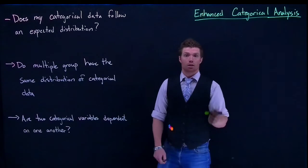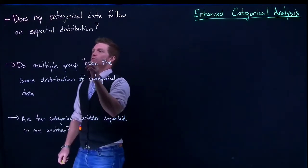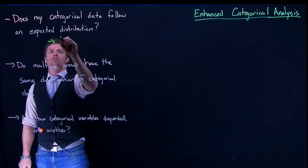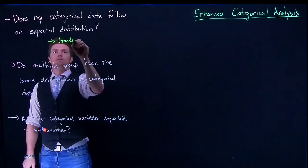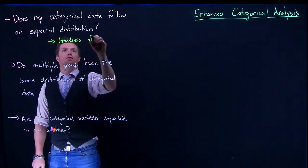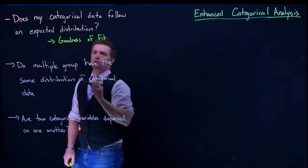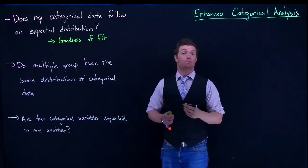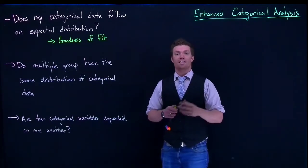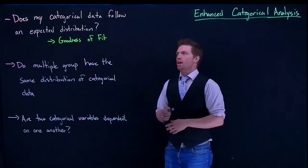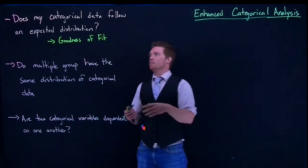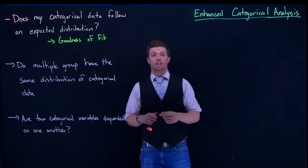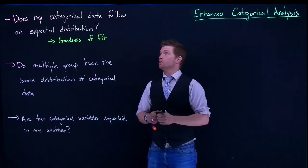We could actually look at that, and that is called a goodness of fit. To run this analysis, we need to know what an expected distribution is or what we think it's supposed to be like. The null hypothesis is that it does follow the expected distribution, and the alternative is that it doesn't—that it follows some other distribution.